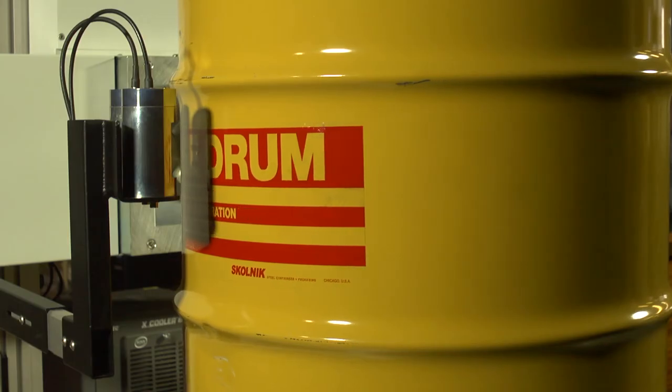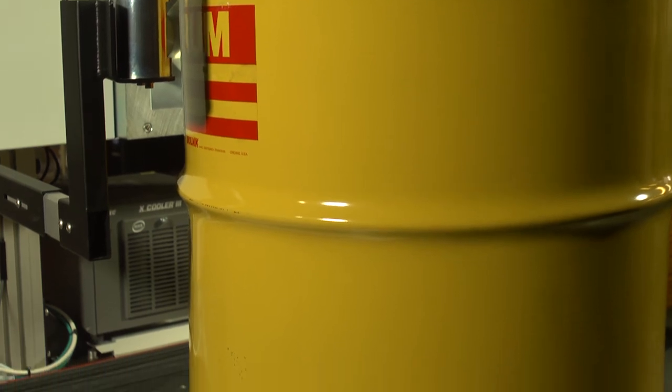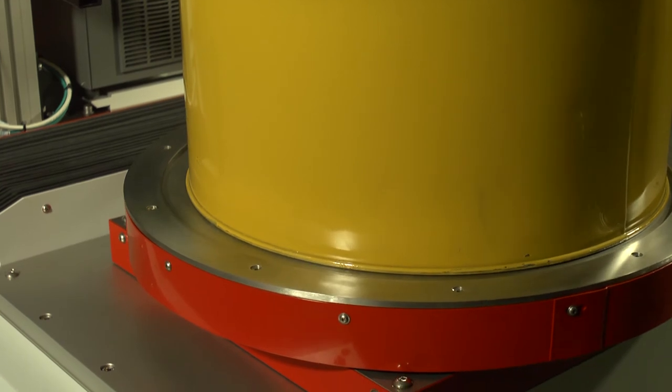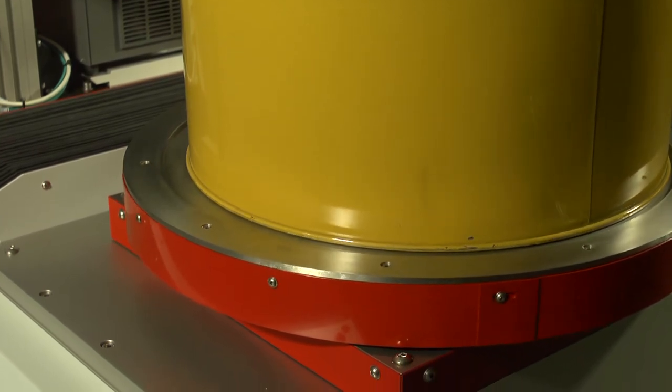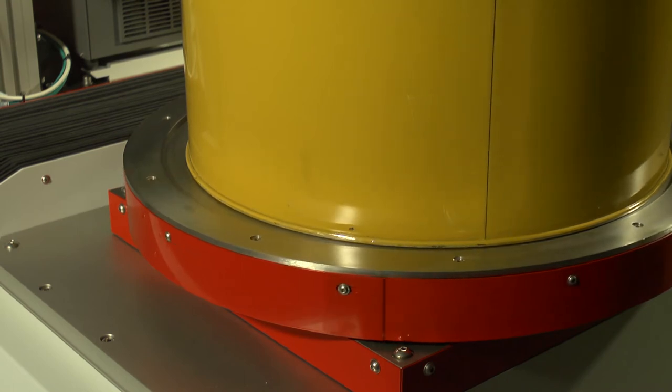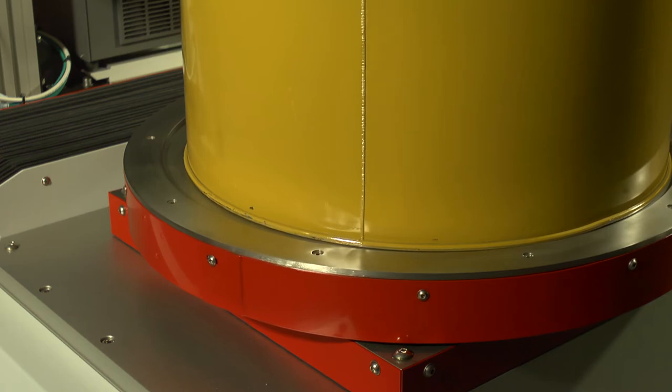Waste drums, which are typically 200 litres or 55 US gallons, or alternatively 400 litres in volume, are placed on the drum rotation platform. The drum rotation platform incorporates a load cell to measure the drum weight, from which the density of the material in the drum or the drum matrix can be determined.